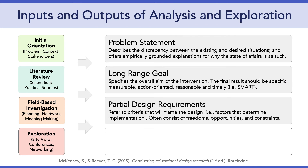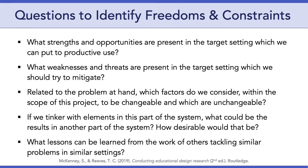The third output is partial design requirements — these refer to the criteria that will frame the design, in other words, factors that will determine implementation. These factors often include freedoms, opportunities, and constraints. In the next phase, design and construction, we'll focus on design requirements in much more detail. For now, consider useful questions like: 'What strengths and opportunities are present in the target setting which can be put to productive use?' Answering these questions will help you identify partial design requirements for your intervention.